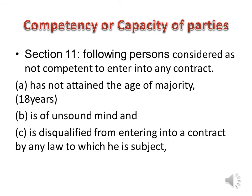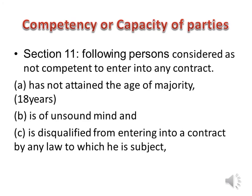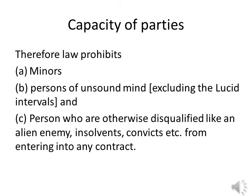Competency or Capacity of Parties — Section 11. The following persons are considered not competent to enter into any contract: 1. A person who has not attained the age of majority (18 years), 2. A person who is of unsound mind, and 3. A person disqualified from entering into a contract by any law. This prohibits minors, persons of unsound mind excluding lucid intervals, and persons otherwise disqualified like alien enemies, insolvents, and convicts.